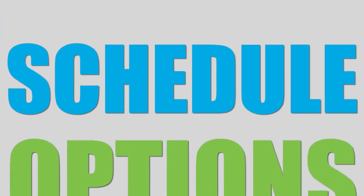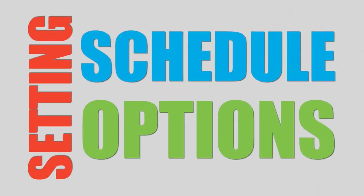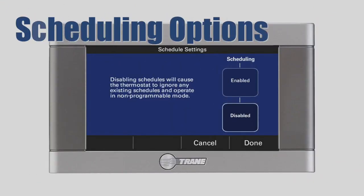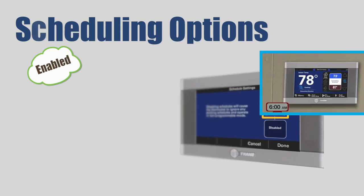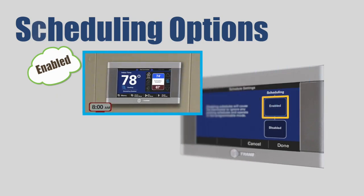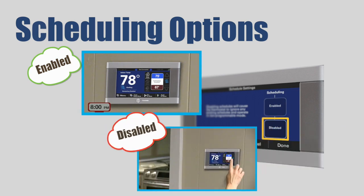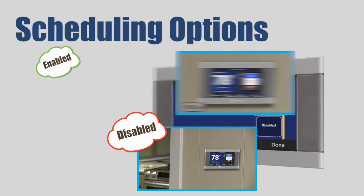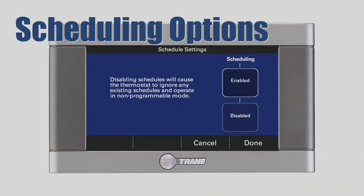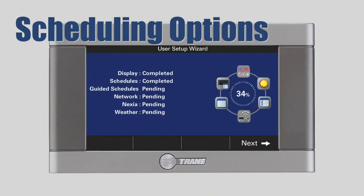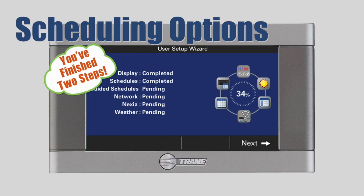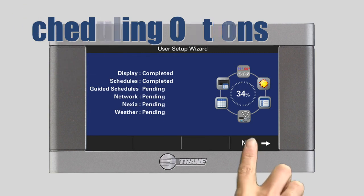Setting Scheduling Options. Now, you'll set the control's scheduling options. When scheduling is enabled, your control will change target temperatures automatically at predetermined times throughout the day. When scheduling is disabled, you will manually change target temperatures. To enable scheduling, select Enable and press Done. The status screen now indicates that you have completed two of six steps in the user setup wizard. To continue, press Next.